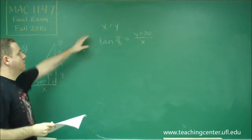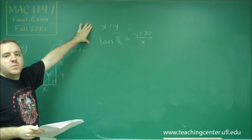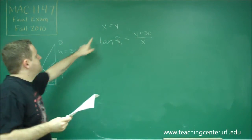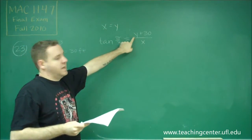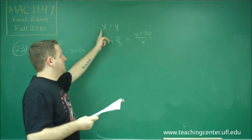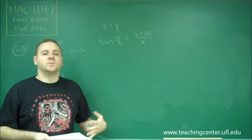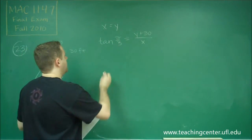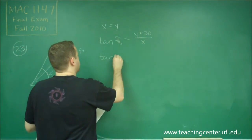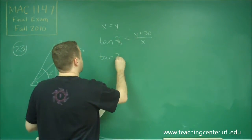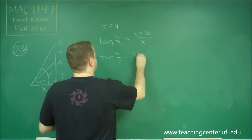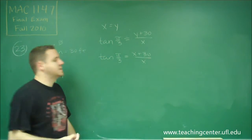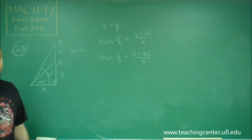These are our two equations, but we want to solve for X. Since we know X equals Y, instead of Y we can just substitute X, making X our only variable. So we write this as tan(π/3) equals X plus 30 over X, and now we only have X.